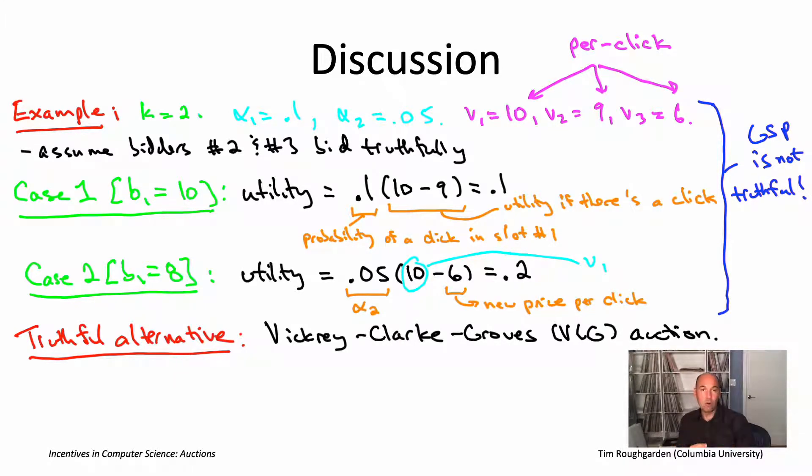And then you can prove, and again, I encourage you to look at the lecture notes available from my website, timroughgarden.org, if you want to see the full details. The answer is yes, the VCG auction is a truthful auction for the sponsored search setting. That's not quite what's actually done usually in practice. Instead, these GSP auctions are used, but they're not super different.